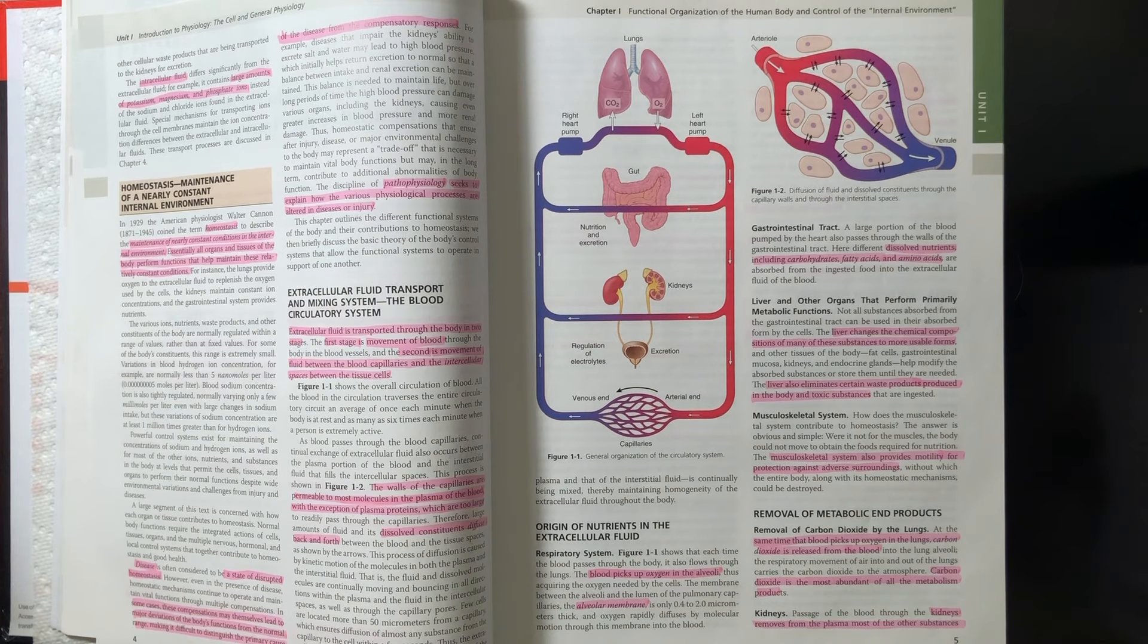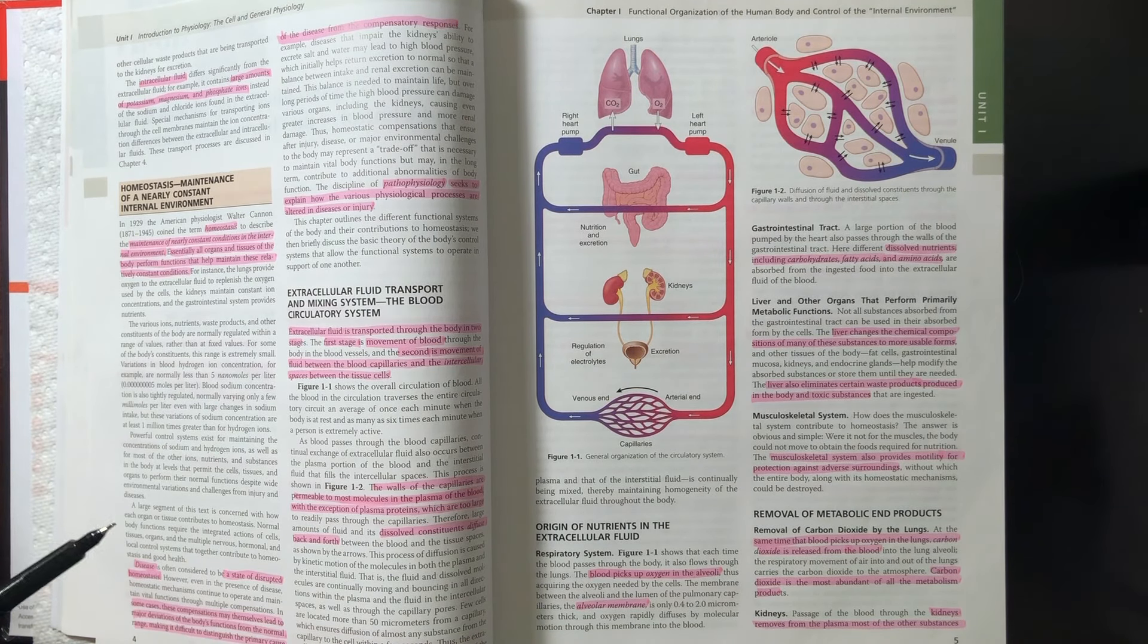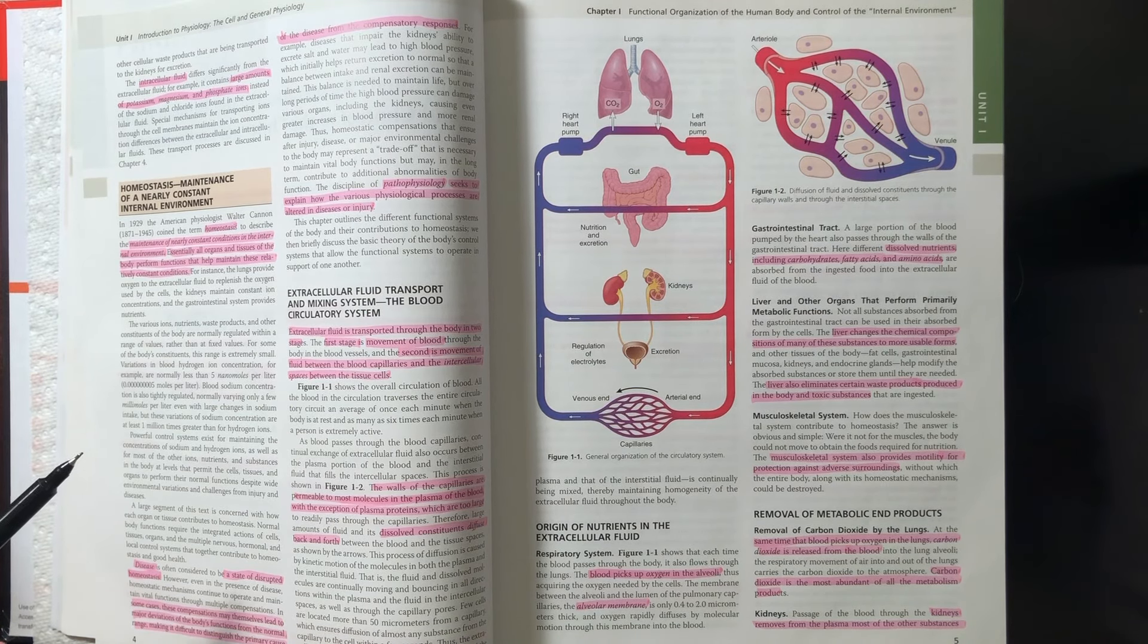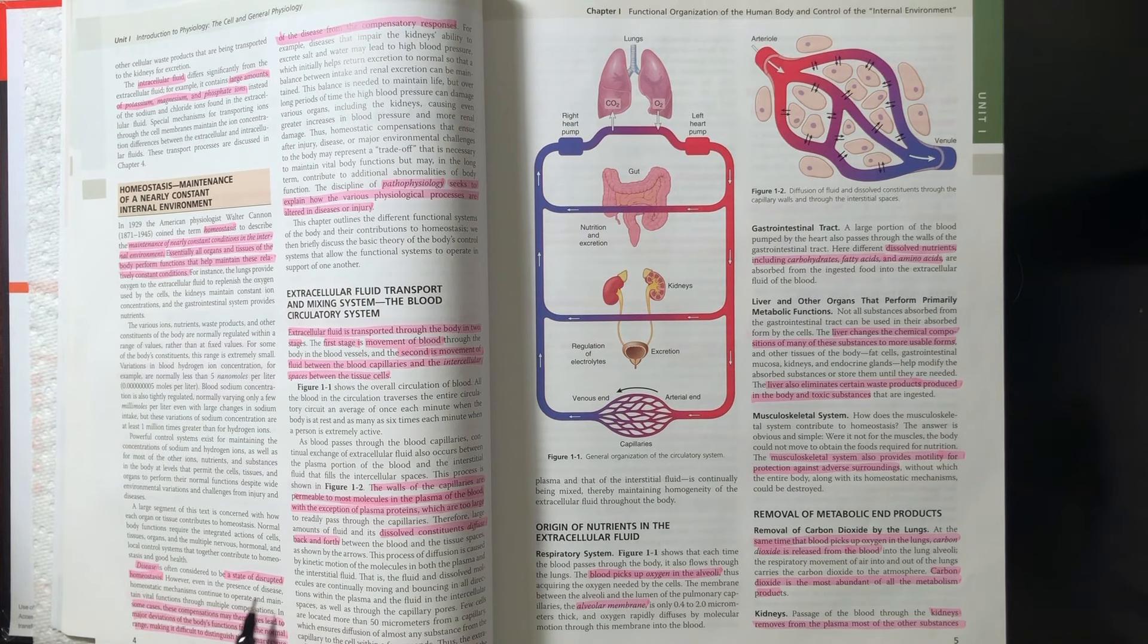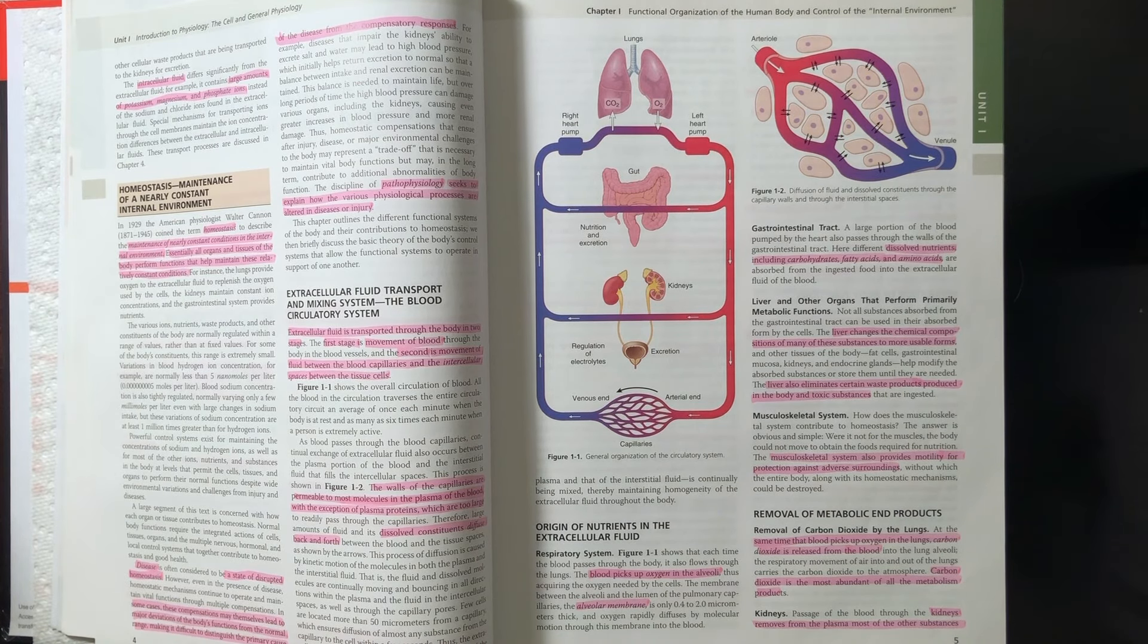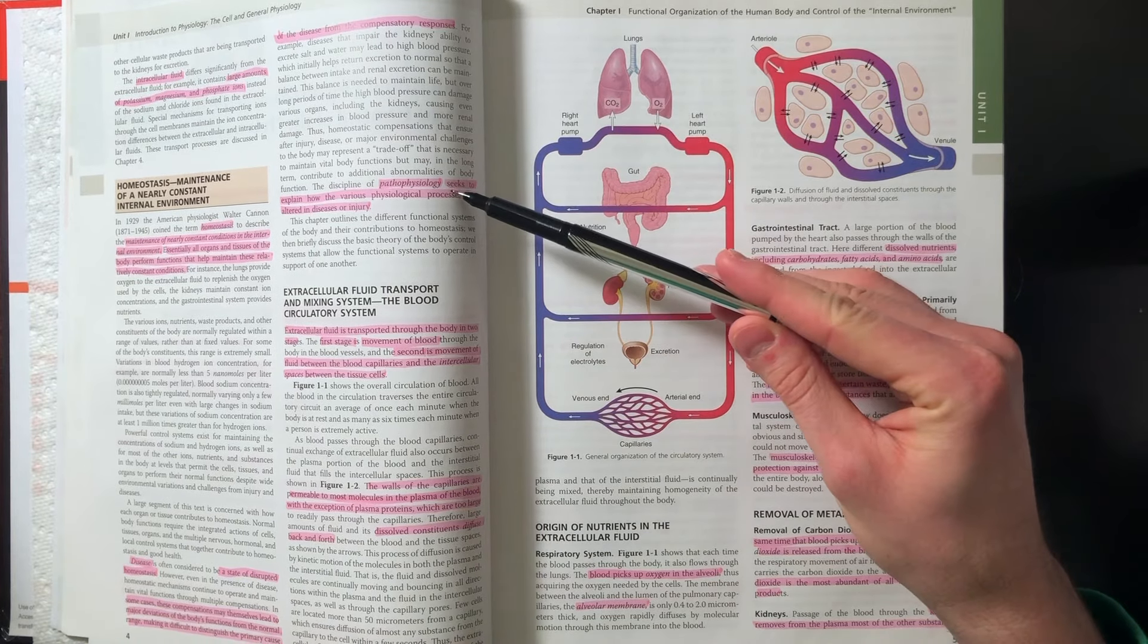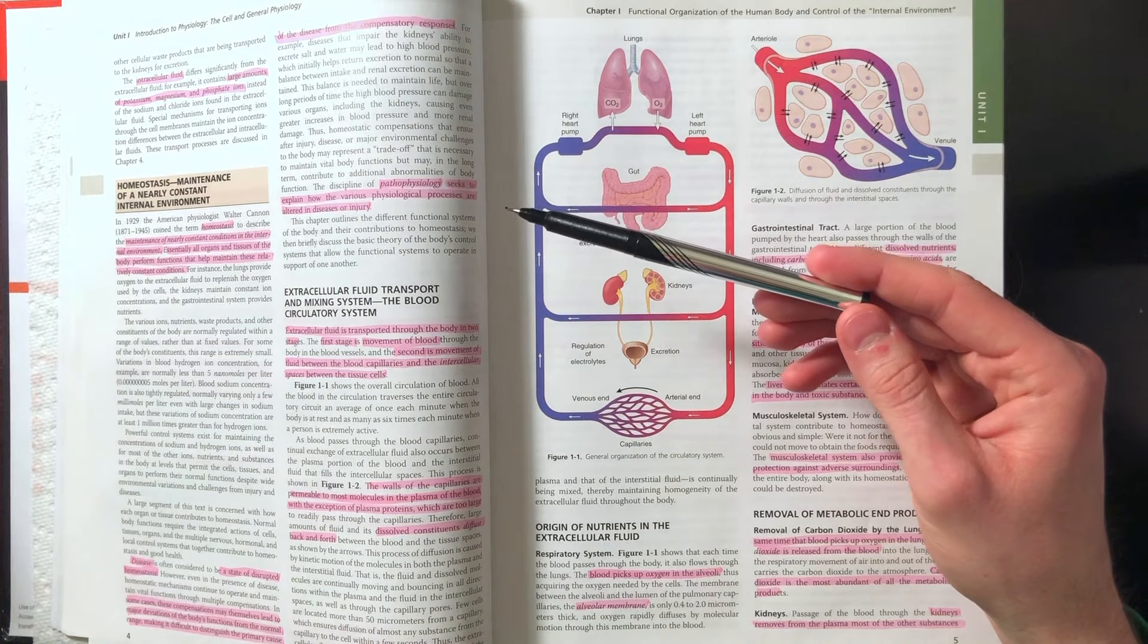As we've already described, homeostasis is essentially that maintenance of the internal environment. Since all of these cells are bathed in the same environment, the body wants to maintain a relatively normal, constant state for them to be able to function. Disease, however, is actually a disruption to homeostasis. Something that alters either the internal environment or alters a homeostatic mechanism, which then impacts its function. The body can also compensate for any disruption to these homeostatic mechanisms and correct any issue. However, if that compensation is too vigorous, sometimes that can actually disrupt other homeostatic mechanisms or other areas of the body. It can be quite hard to distinguish the primary cause for the disruption versus the compensatory response. And that's essentially what pathophysiology is. That's trying to explain the different physiological processes in disease and injury.